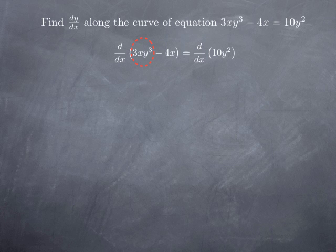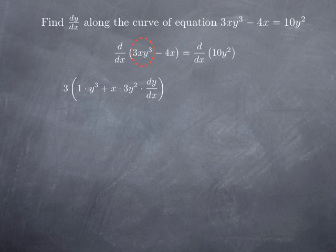When I differentiate 3xy cubed, I have a product — 3 times the product xy cubed — so I use the product rule. Applying the product rule, the derivative of the first factor x is 1, the second factor y cubed is unchanged, and then we have x multiplied by the derivative of y cubed. Since y is a function of x, y cubed is a cube of a function, so we use the chain rule.